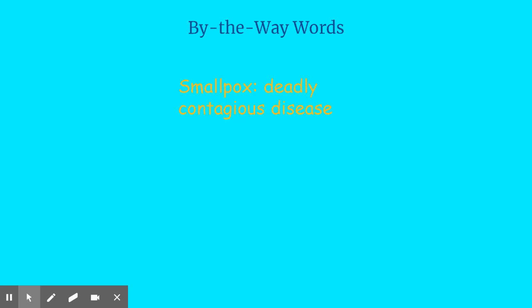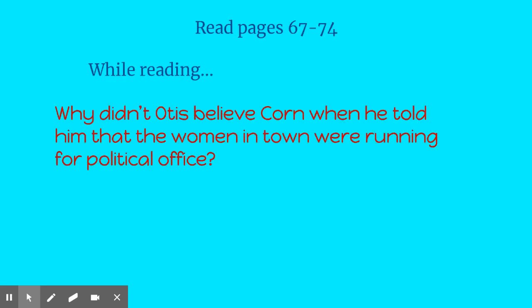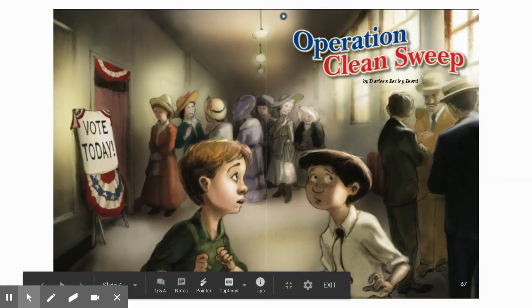While we're reading today, we're going to come across the word smallpox — that's a deadly, contagious disease. The good news is it's a disease they developed a vaccine for, and it's not seen in the United States anymore because it has been eradicated, or gotten rid of. We're going to read pages 67 through 74. I want you to think: why didn't Otis believe Corn when he told him that the women in town were running for political office? Operation Clean Sweep.